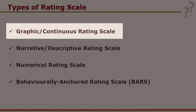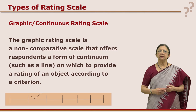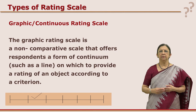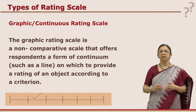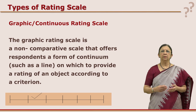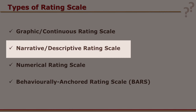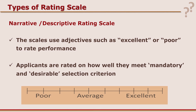The graphic or continuous rating scale is a non-comparative rating scale — it does not have statements or categories which compare each other. Criteria are given and the rater puts a tick mark on the scale. The narrative or descriptive rating scale, as the name suggests, provides a description of the categories, for example poor, excellent or average.